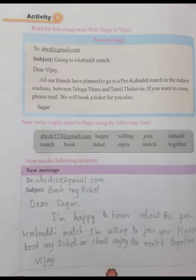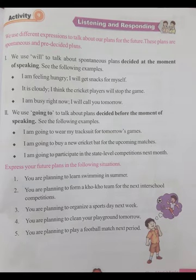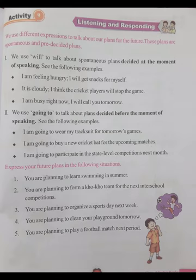Activity 9: Listening and responding. We use different expressions to talk about our plans for the future. These plans are spontaneous and pre-decided plans. 1. We use 'will' to talk about spontaneous plans decided at the moment of speaking. Examples: 'I am feeling hungry, I will get snacks for myself.' 'It is cloudy, I think the cricket players will stop the game.' 'I am busy right now, I will call you tomorrow.'